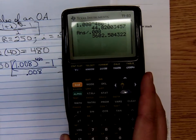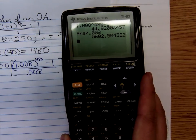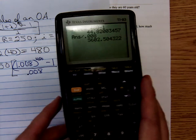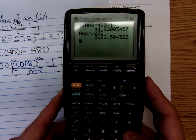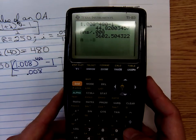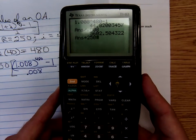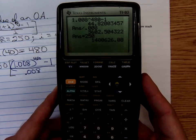I punched in that numerator, that bracket amount 1.008 to the 480 minus 1 divided by 0.008, gave me that 5206.